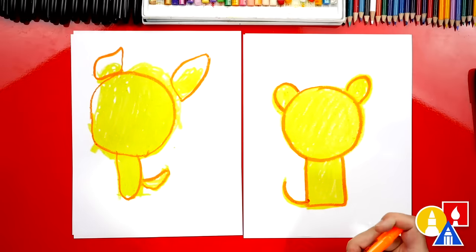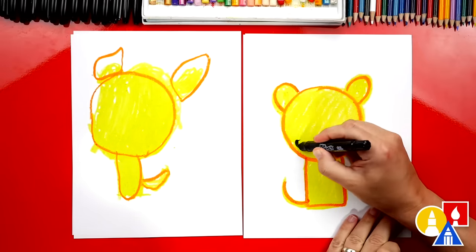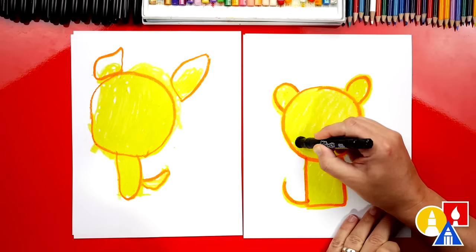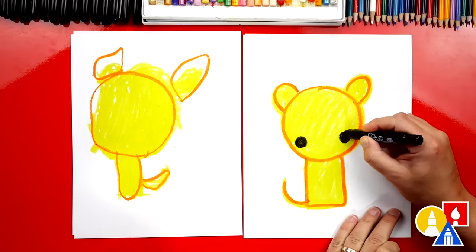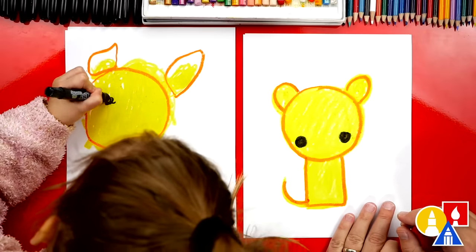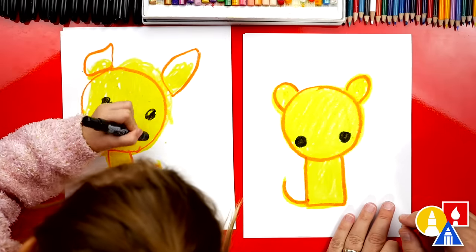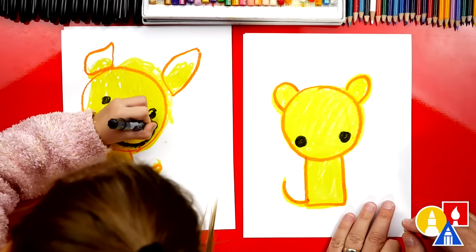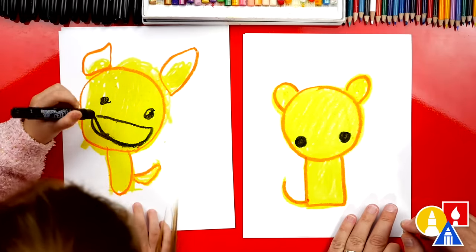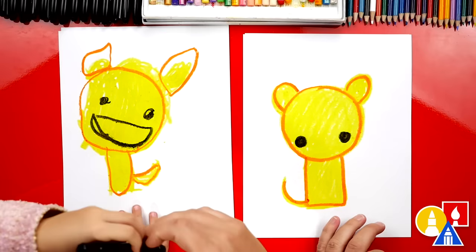Now we're going to switch to our black crayon and we're going to add the eyes. Let's do one eye right here. I'm going to draw a circle and a circle over here for the other eye. One eye. Two eyes. And a happy face. Oh, I love it. That looks really cute.